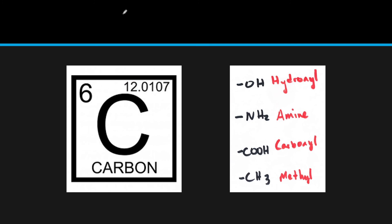Carbon is very unique in that it has four valence electrons. When you draw the outer shell electrons — the Lewis dot structure, if you remember from chemistry — what this signifies is that carbon can make four bonds. Since carbon can make four covalent bonds, it's going to be able to bond with a lot of different things, giving rise to all the properties that we'll see.